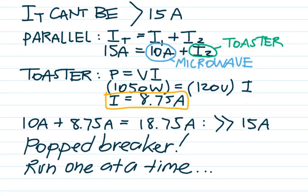18.75 amps is greater than 15 — it's not going to work. It's going to heat up the wire and pop the breaker in the basement; you'd have to run them one at a time. One possible solution is to have an electrician run a second circuit in the kitchen with alternating outlets, so the toaster is on one circuit and the microwave on another, giving you two 15-amp circuits.